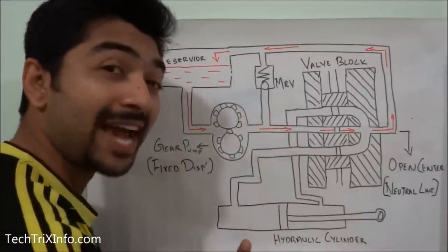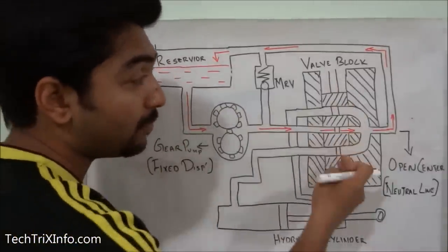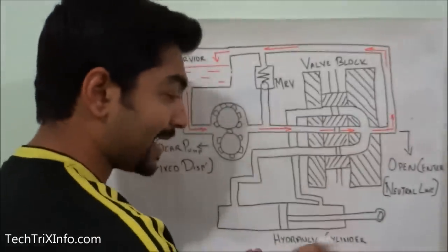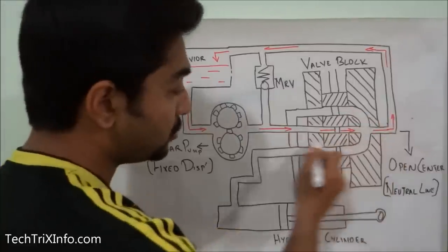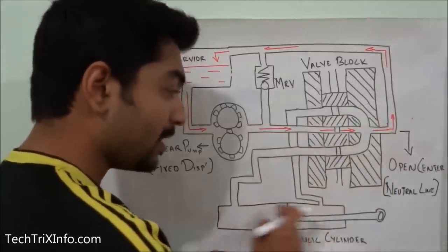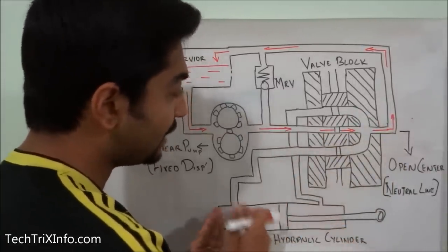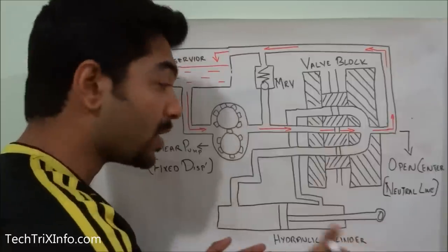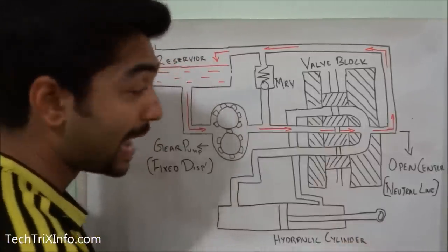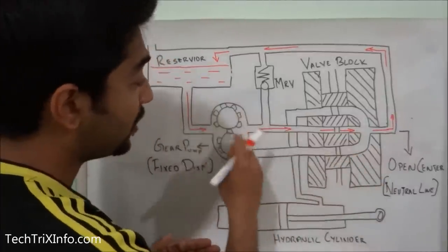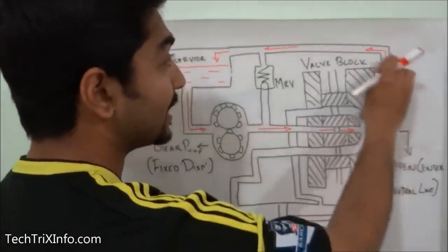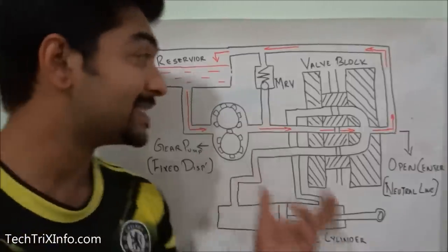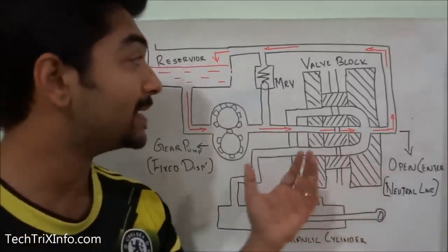When the valve block or control valve is activated, the spools in the center move and the lines get connected. The line towards the actuator or hydraulic cylinder gets connected, and the flow channels towards the hydraulic cylinder — either to the head side or the rod side — while the flow from the other side passes back towards the reservoir. When the flow gets into the hydraulic cylinder, work happens. When no work is happening — in the neutral condition — the flow directly passes through the open center and returns back to the reservoir. Such a system is called an open-center hydraulic system.